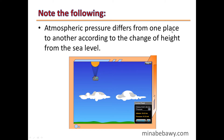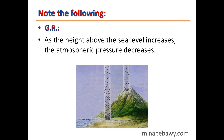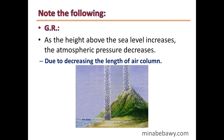So, the atmospheric pressure differs from one place to another according to the change in height from sea level — by increasing the height, the pressure decreases. For example, a person on top of a mountain is affected by a lower pressure than the same person at sea level. This is due to the decreasing length of the air column above them.